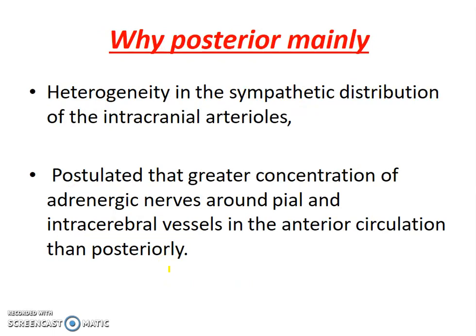Why is the posterior part of the brain more commonly involved than the anterior or any other part? It is because of the sympathetic nerve fiber distribution. It is postulated that the adrenergic nerves around the blood vessels of the anterior circulation are somewhat more than the posterior. So the dysregulation is more common in the posterior than the anterior.